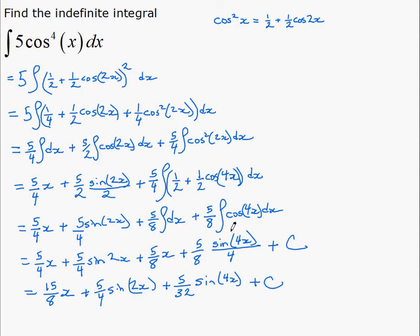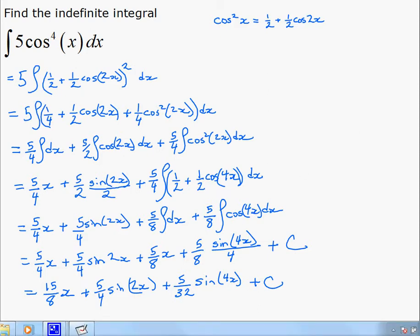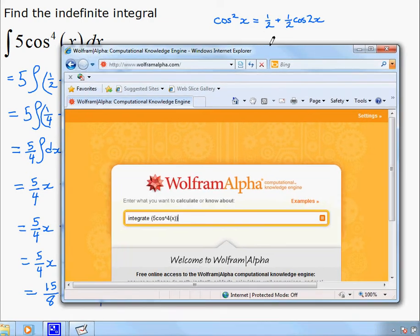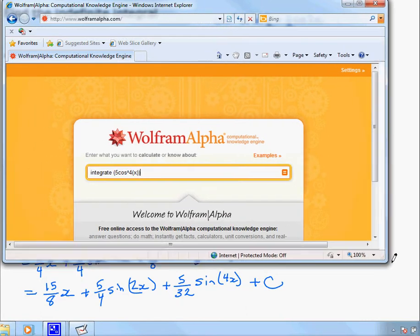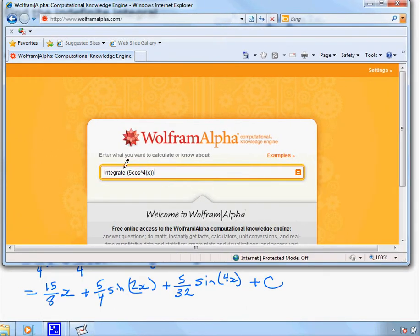Now, just out of interest here, I've mentioned in class this Wolfram site for solving some integrals. And we'll try to compare our answer there. But if we go to this website here, wolframalpha.com and type in integrate 5 cosine to the 4 of x, which was our original question,